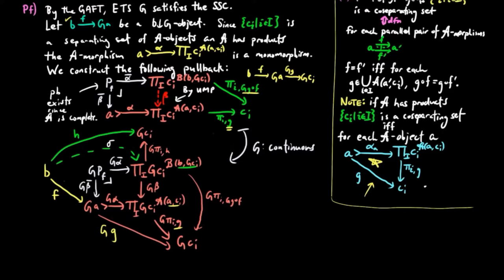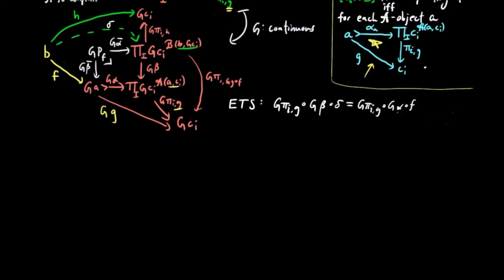We must show that G beta delta equals G alpha F. By the universal mapping property of the product on the lower right, it suffices to show that for each A-morphism G from A to C_I, the post-compositions of the top and bottom roads by the projection G π_{IG} are equal — that is, G π_{IG} G beta delta equals G π_{IG} G alpha F. On the left, since G π_{IG} G beta is G π_{IG}GF, we obtain G π_{IG}GF delta. By the definition of delta, this is just GGF, which equals G π_{IG} G alpha F.